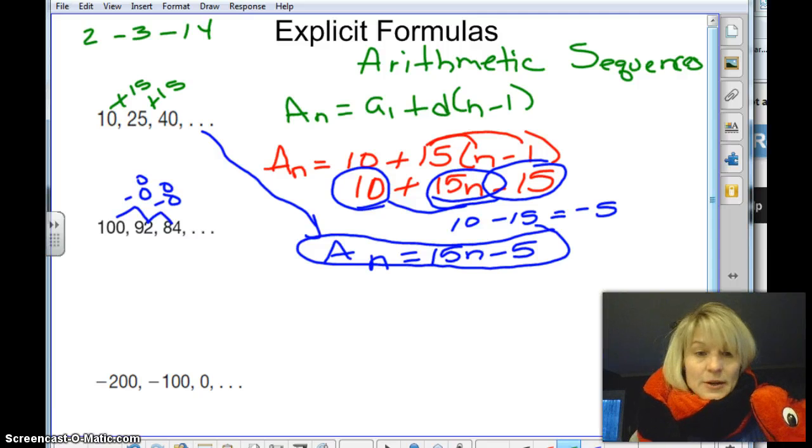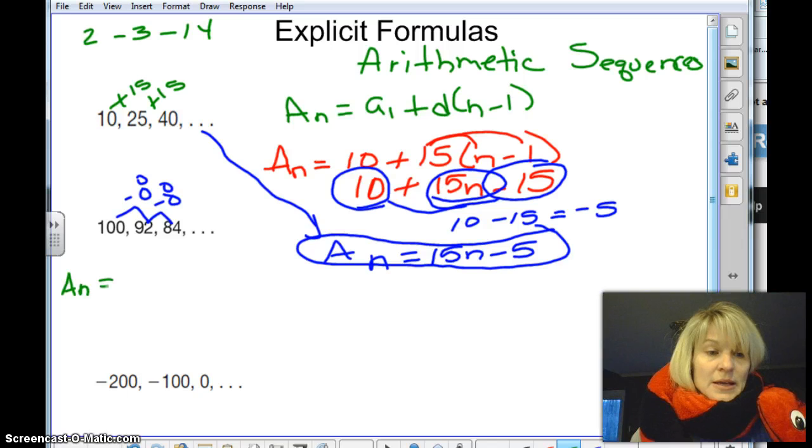So we're going to do the same thing here. I'm going to start with my formula. We have a sub n. And then we're going to start with a sub 1, which I know is 100, plus the d, which I now know is negative 8. And then I don't know the term we're trying to find, so I keep that as n minus 1.